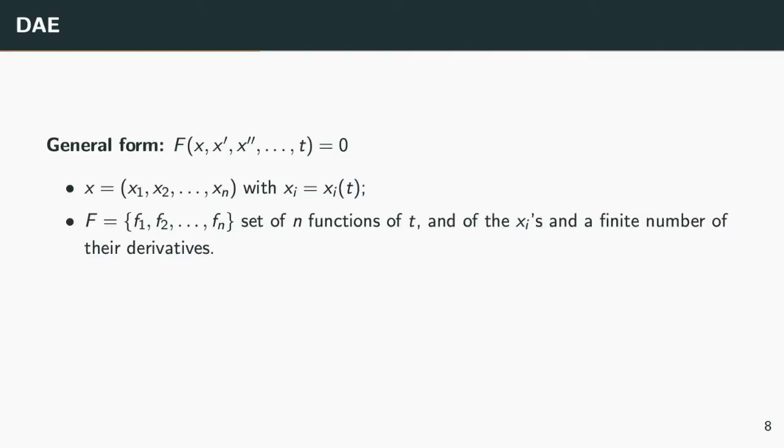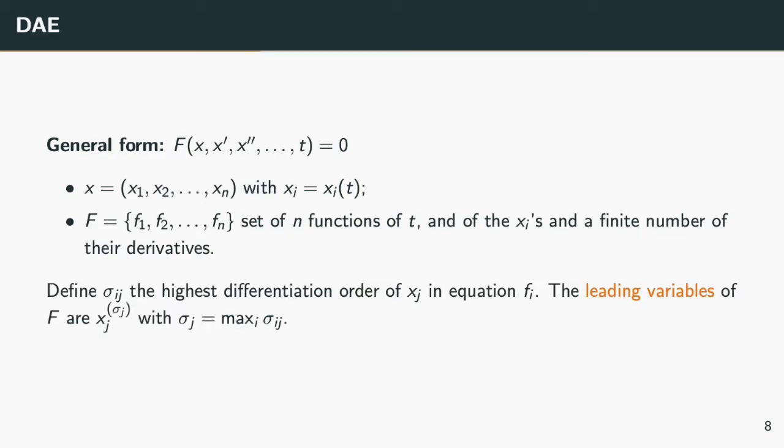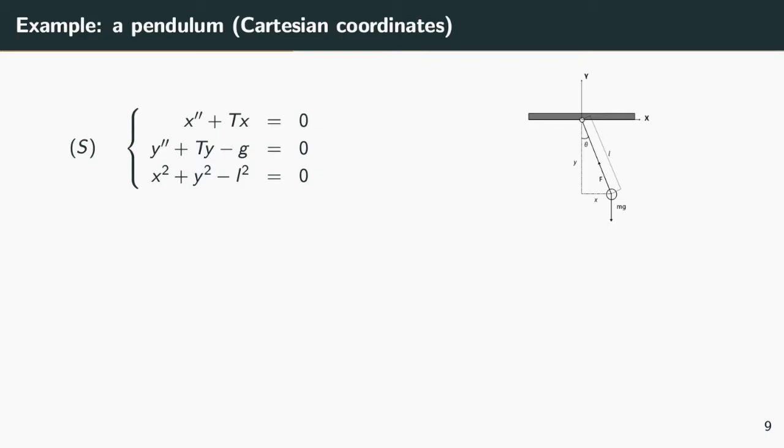A DAE is defined as a set of equations of the form f equals zero, where f is a function of time, but also of variables denoted by xi, as well as a finite number of their time derivatives. The simplest way to describe the general structure of such an equation system is to define coefficients sigma ij. Each of those are equal to the highest differentiation order of variable xj in equation fi. For a given value of j, the maximum value of the sigma ij is the highest differentiation order of xj in the whole DAE. It defines the leading variable corresponding to xj. If it is xj itself, then xj is called an algebraic variable.